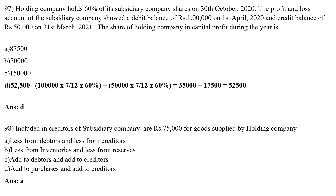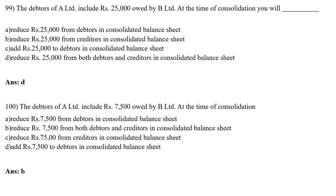Included in creditors of subsidiary company are Rs.75,000 for goods supplied by holding company. The correct answer is Option A — less from debtors and less from creditors. Similarly, if debtors of A Limited include Rs.25,000 owed by B Limited, at consolidation you reduce Rs.25,000 from both debtors and creditors in the consolidated balance sheet.